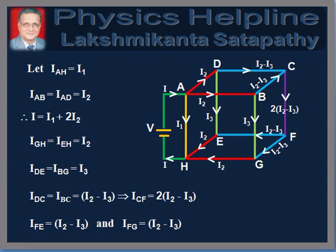Therefore, applying Kirchhoff's junction rule at A, we get I is equal to I1 plus 2I2. Again, currents in the wires EH and GH are equal. As the current leaving the network at H should also be equal to I, which is equal to I1 plus 2I2, the currents in the wires EH and GH are each equal to I2. Also from symmetry, the currents in the wires DE and BG are equal. Let it be equal to I3.